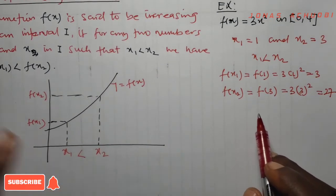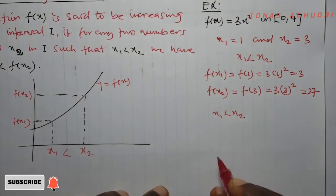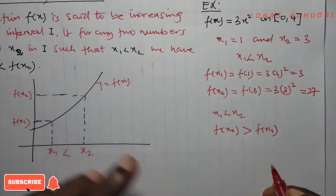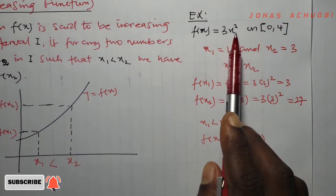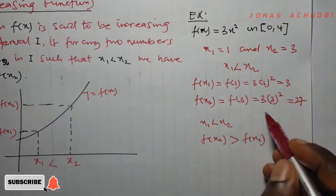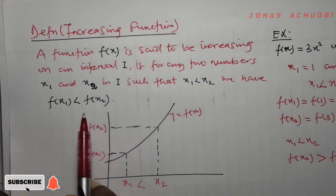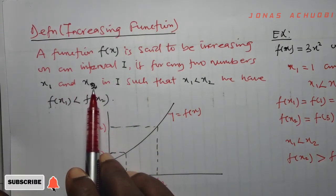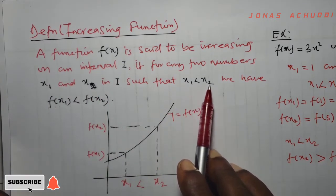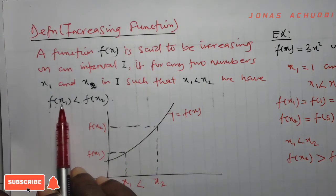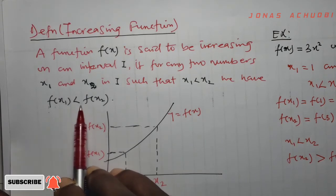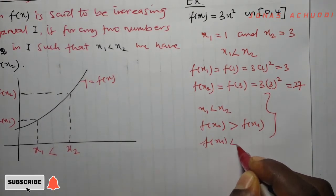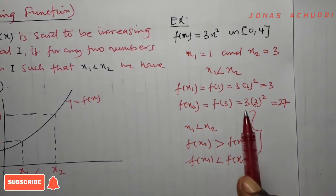What do we observe? We observe that x1 is less than x2, and the functional value of x2, f of x2, is greater than f of x1. So the function f of x equal to 3x squared defined on the interval [0, 4] is indeed an increasing function, because it satisfies the condition of our definition: f of x is increasing on an interval if we pick any two numbers such that x1 is less than x2 and f of x1 is less than f of x2.